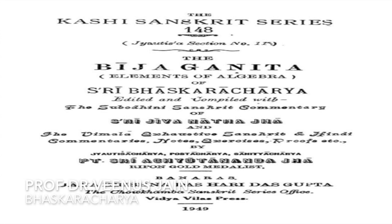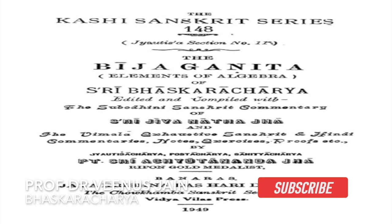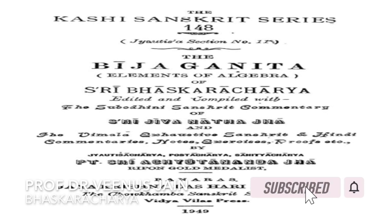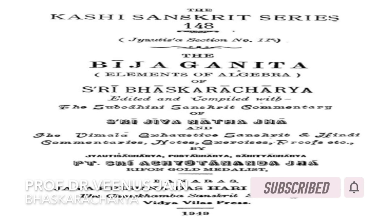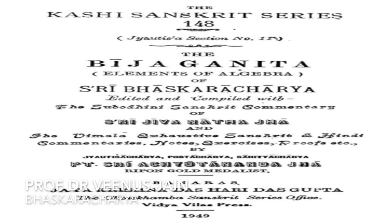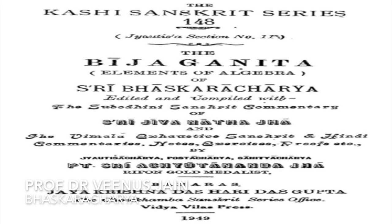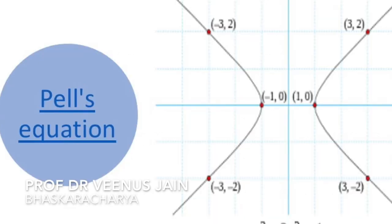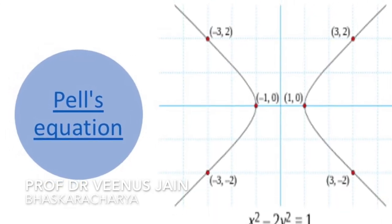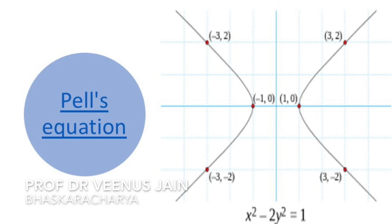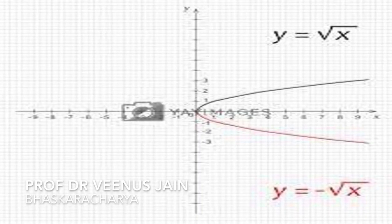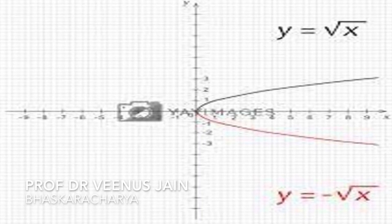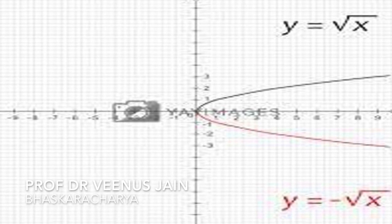The second part is known as Bijganit, that is, algebra. His Bijganit was a work in 12 chapters with 213 verses. He discusses zero, infinity, positive and negative numbers, and indeterminate equations including the now-called Pell's equation. It was the first text to recognize that a positive number has two square roots: a positive and a negative square root.